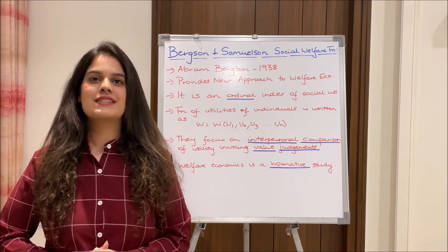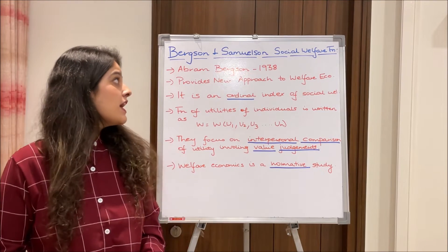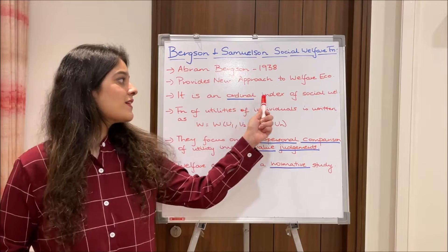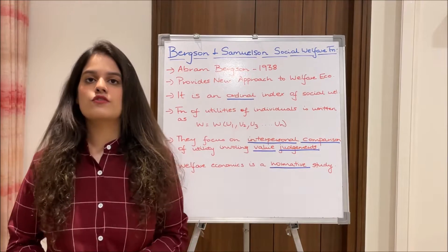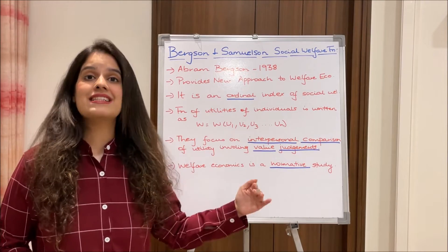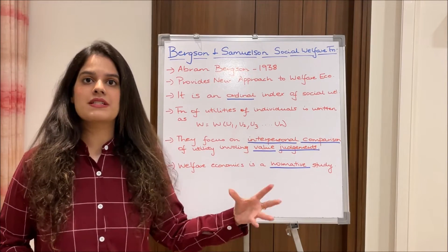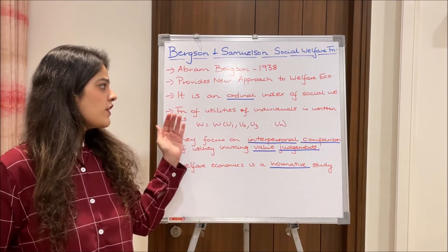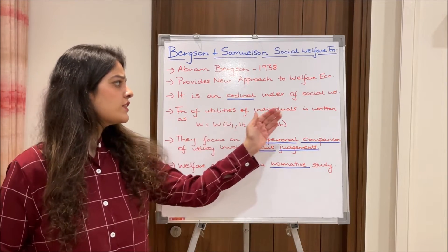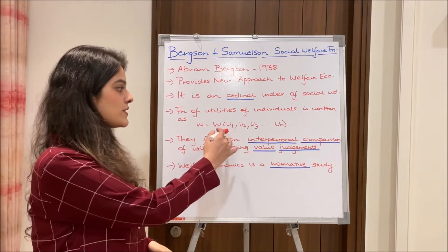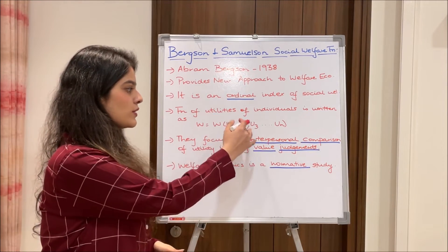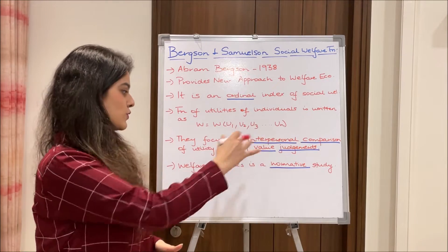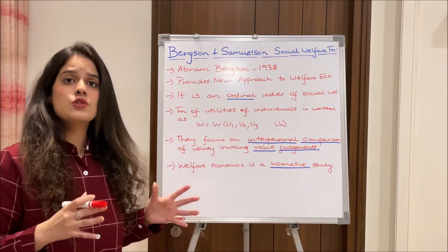One thing to be noted is that it is an ordinal index of social welfare — that is, it gives ranks and not numbers like cardinal utility. The function of the utilities of individuals is written as W = U1, U2, U3, and so on.